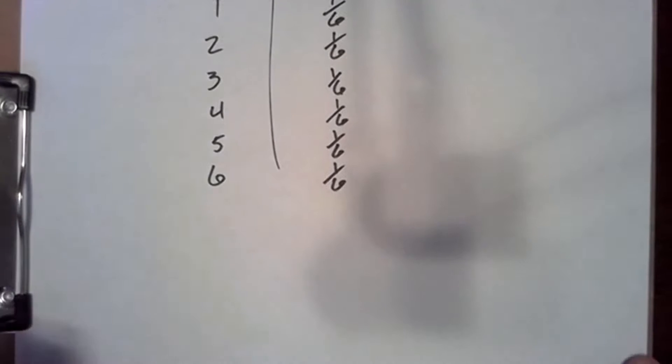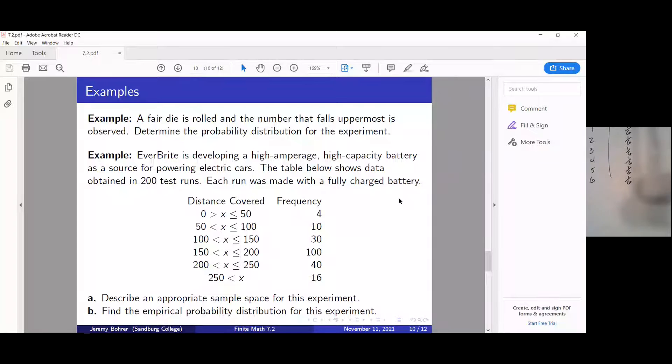In our second problem, Everbright is developing a high amperage, high capacity battery as a source for powering electric cars. The table below shows data obtained in 200 test runs, and each run was made with a fully charged battery.